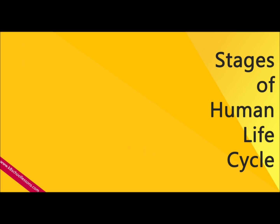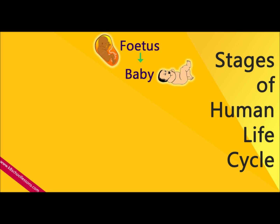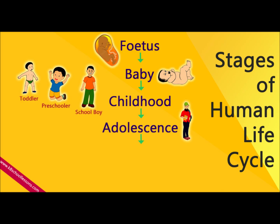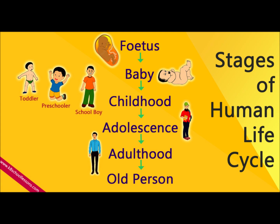Stages of the human life cycle: Fetus, Baby, Childhood — which includes Toddler, Preschooler, and Schoolboy — Adolescence, Adulthood, and Old person.